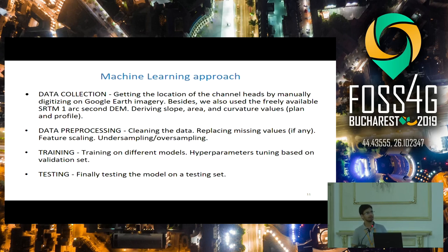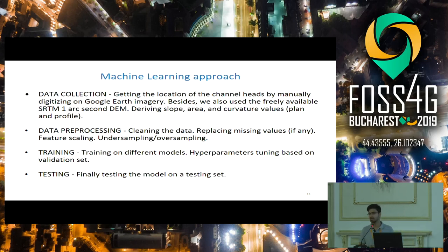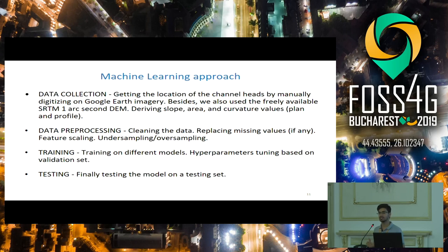For this particular problem, our data is heavily imbalanced. For every 100 pixel values, there might be only one channel head while the other 99 are not channel heads. We have to perform undersampling or oversampling. Undersampling is not ideal because it means losing much of our data — it gets rid of the grid cells that are not channel heads. So we performed oversampling: we replicated the pixels which were our channel heads, creating copies so that we could bring them to almost a similar scale.